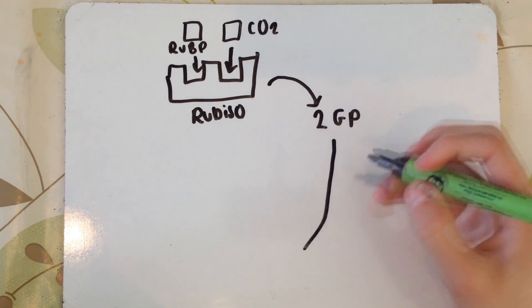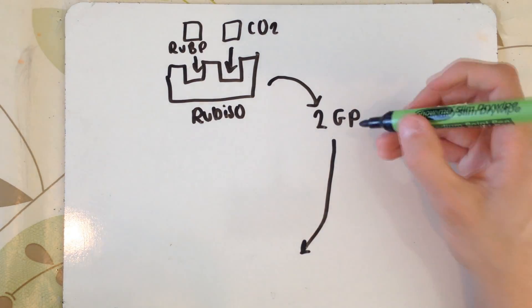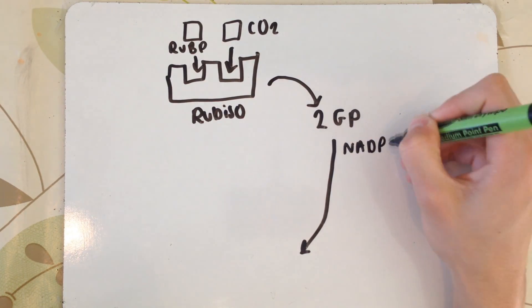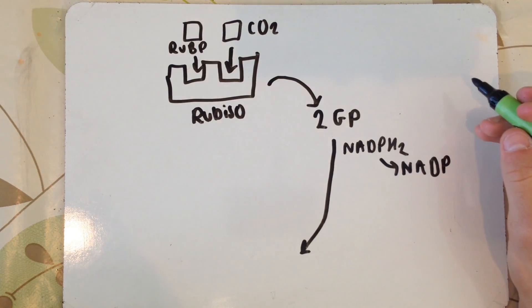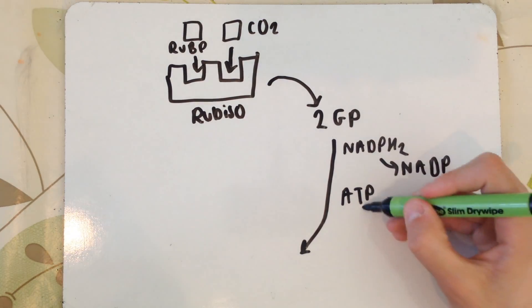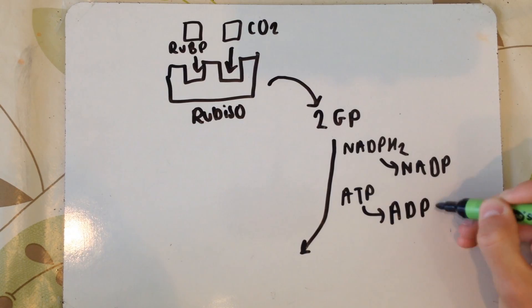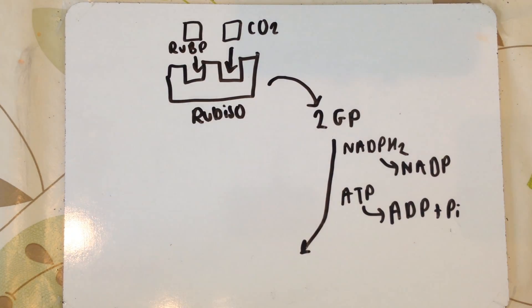We then need to convert the glycerate phosphate to something else, but to do this we need to use the products of the light-dependent reactions we've just done. The reduced NADP goes to oxidized NADP, and ATP is turned to ADP as the phosphate group is used during this reaction. This produces 2 molecules of triose phosphate.